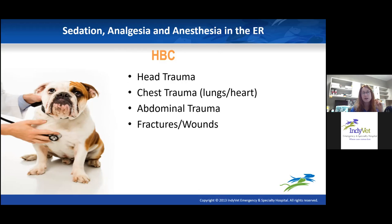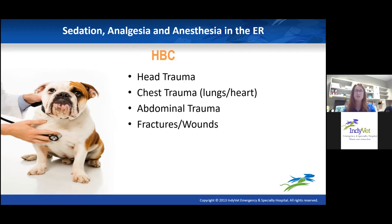Do we have trauma to the chest — not just the lungs, but the heart as well? Do we have abdominal trauma to major organs? Is there a laceration, splenic torsion, mesenteric torsion, or something causing extreme abdominal pain? Is there abdominal fluid — blood in the abdomen? And then of course, fractures and wounds, which are pretty obvious and visible.